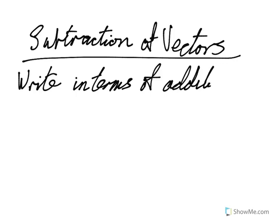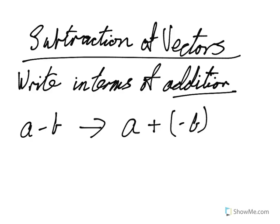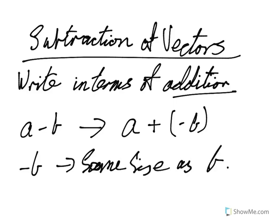What we do is write a vector subtraction in terms of addition. So if we've got a minus b, then we express that as adding the negative of b. So negative b is the same size as b, but in opposite direction.